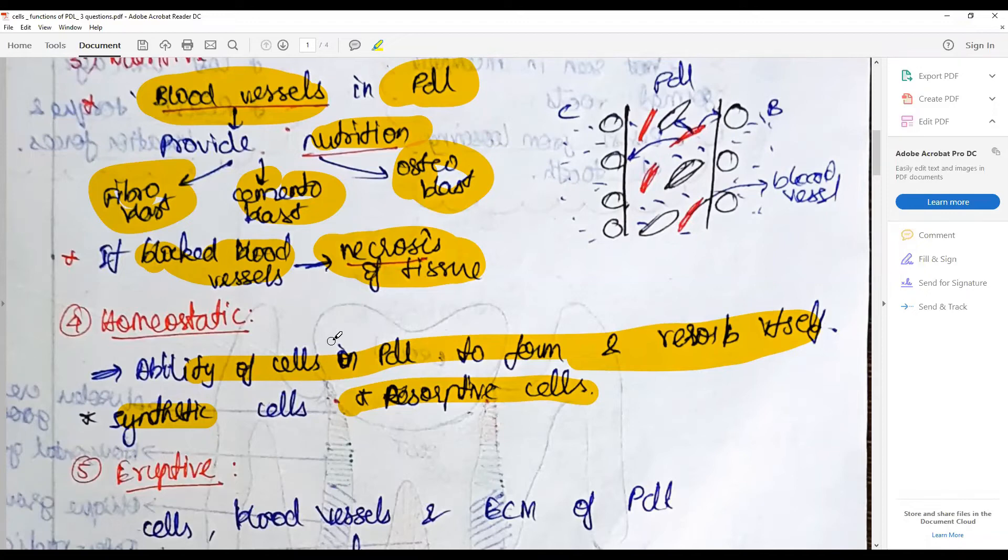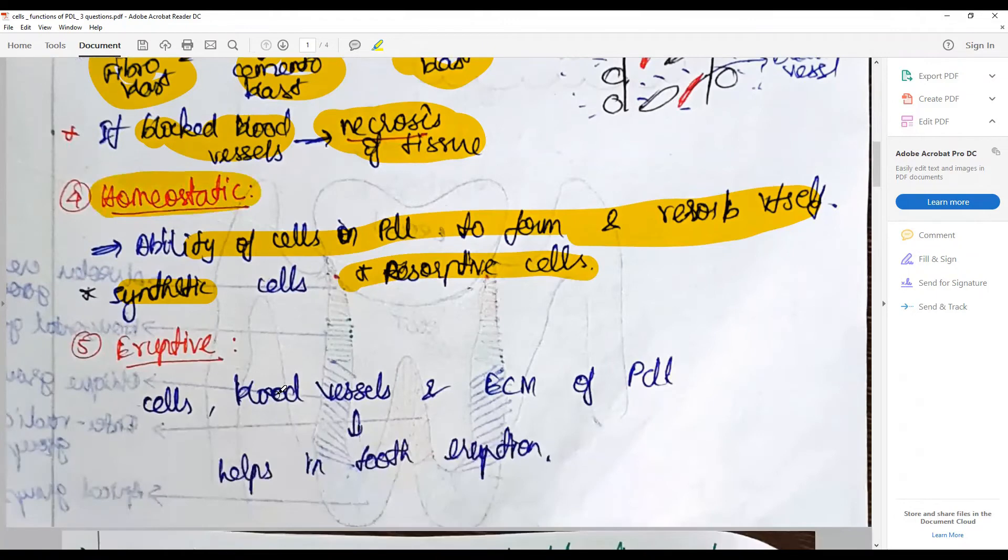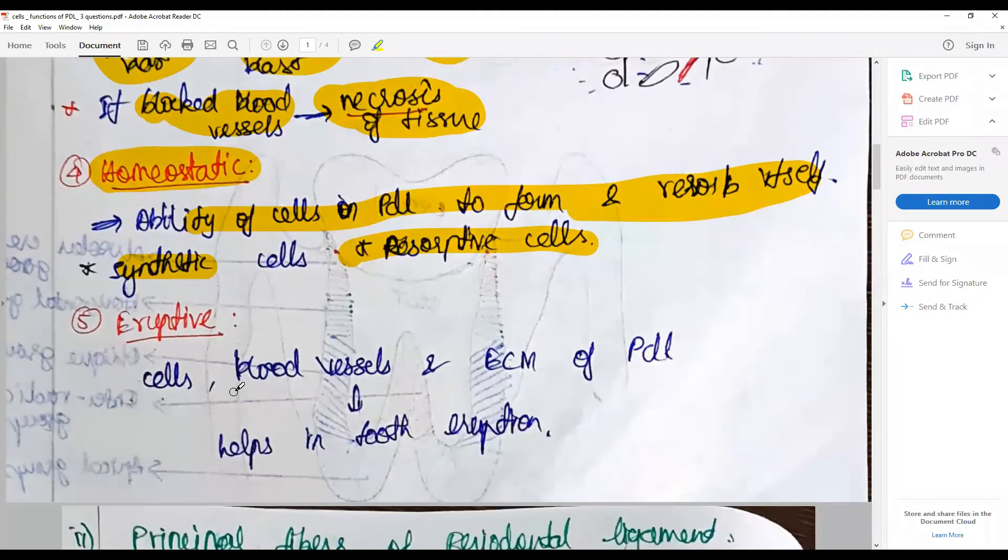Eruptive: people believe that the cells of the fibroblast via the fibronexus, fibronectin, or the blood vessels, and the extracellular matrix in the PDL contribute to tooth eruption, so they are eruptive in function.